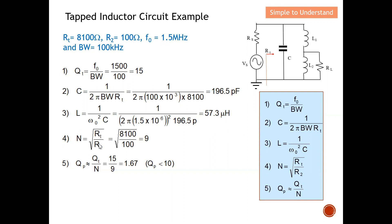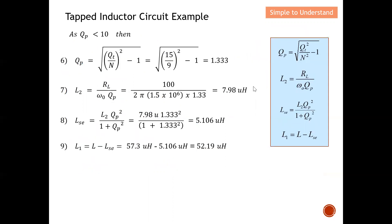Step 5: Calculate Qp. From this I compute Qp = 1.67, which is less than 10. Therefore I identify the set of formulas for Qp less than 10 to use for the next stage of calculation.